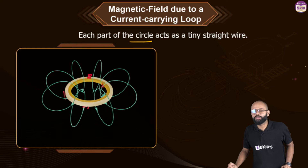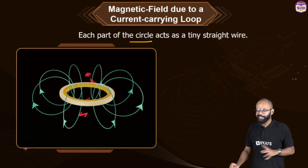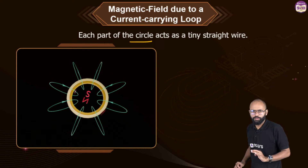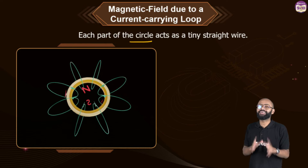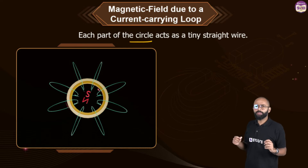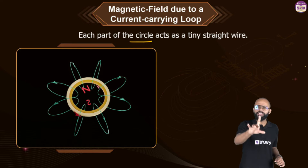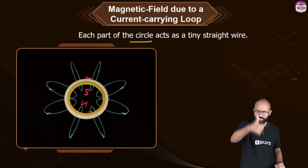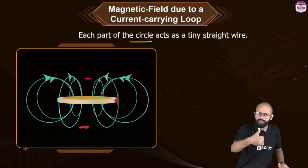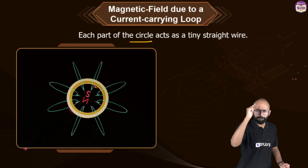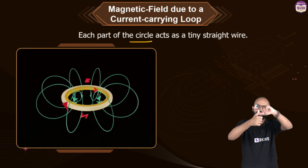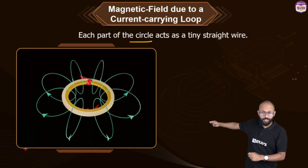Where will north and south poles form? The right-hand thumb rule can act as a shortcut — note this is a shortcut method, not to be written in the exam. In the right-hand thumb rule, if current is in one direction, magnetic field lines curl in a certain direction. By interchanging them: if current is going in a particular direction around the loop, the thumb points to the side from which magnetic field lines come out — that side is the north pole.